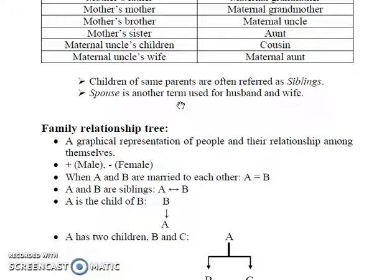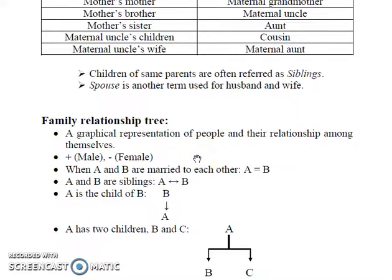Now let's discuss the approach for solving the questions with minimum effort. The most common and widely used method is family relationship tree. It is a graphical representation of people and their relationship among themselves. Here, we use arrows, plus, minus and other such symbols to convey our message graphically.